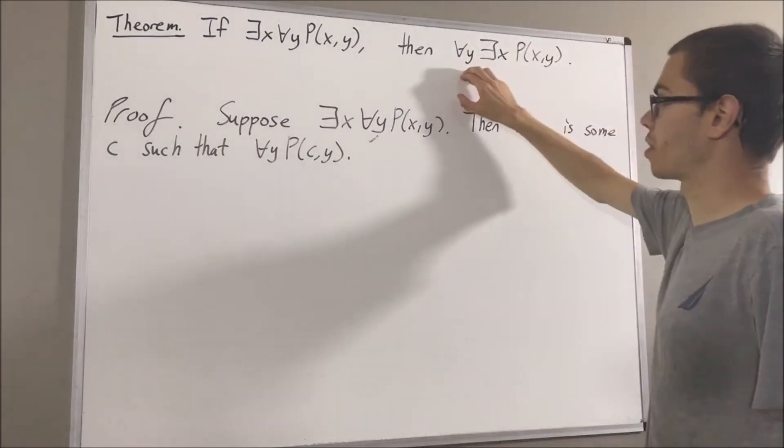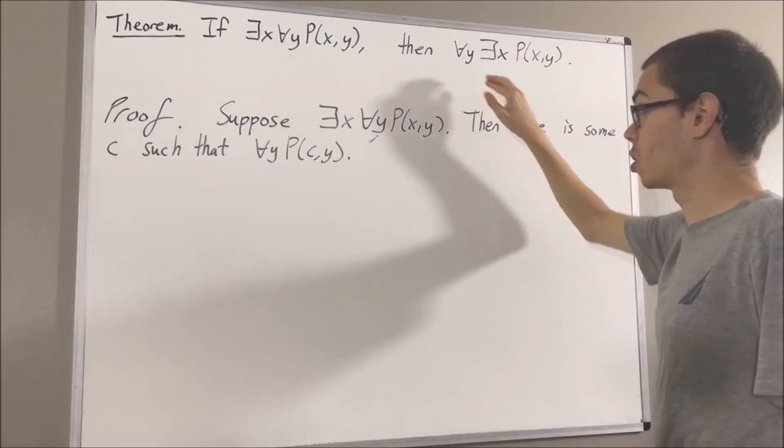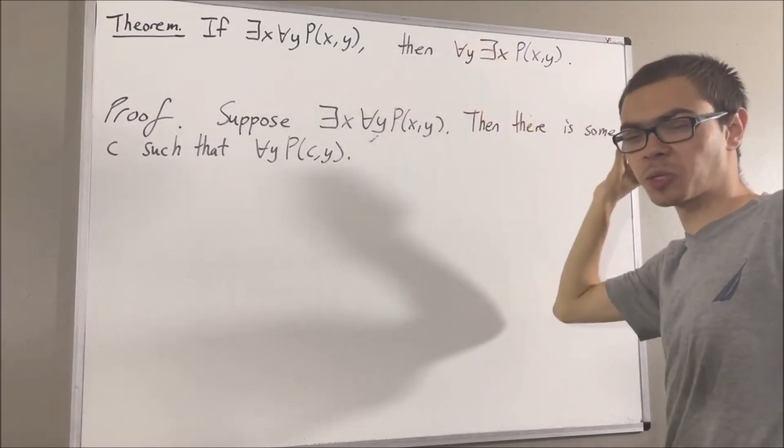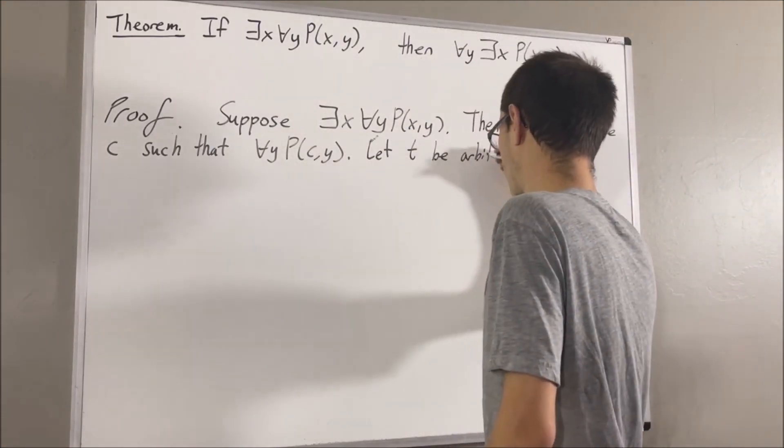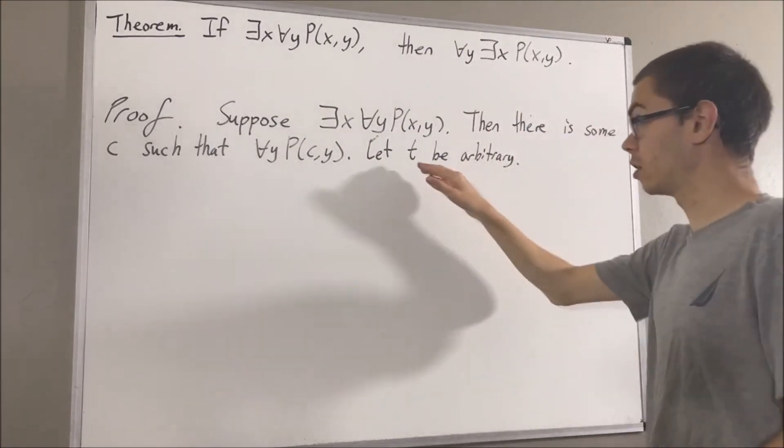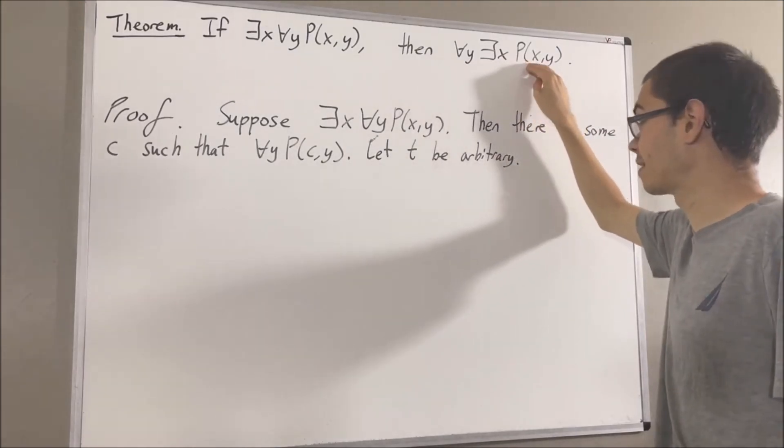Now remember, we want to show that this statement is true. And since we're trying to prove a statement about all objects, let's give ourselves an arbitrary object. I'll call it t. And with t, we want to show that there exists an x such that P(x,t).